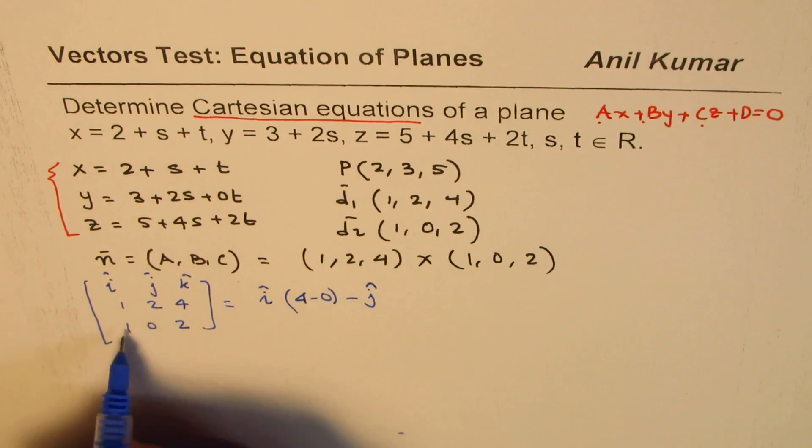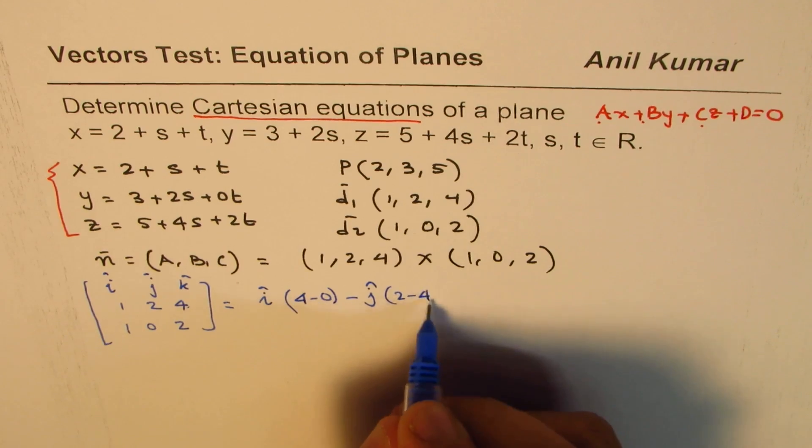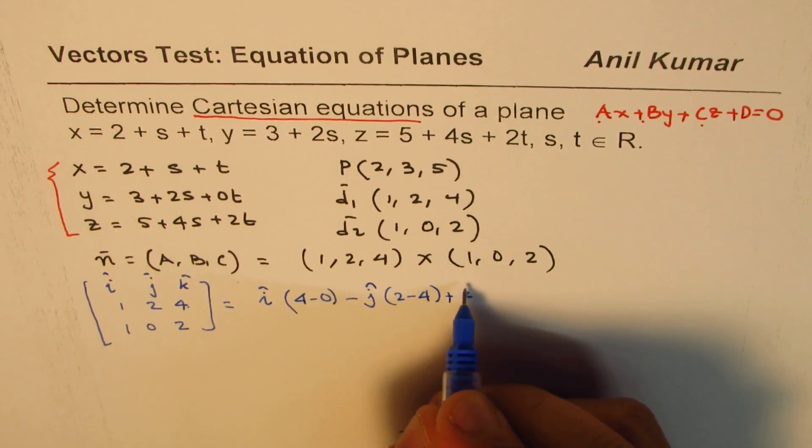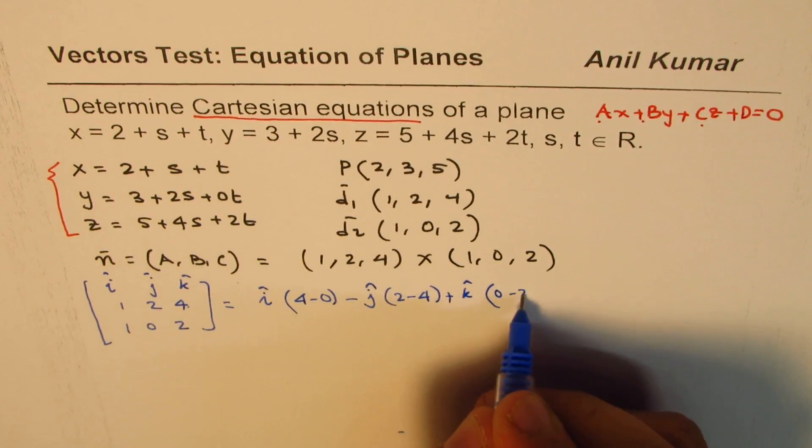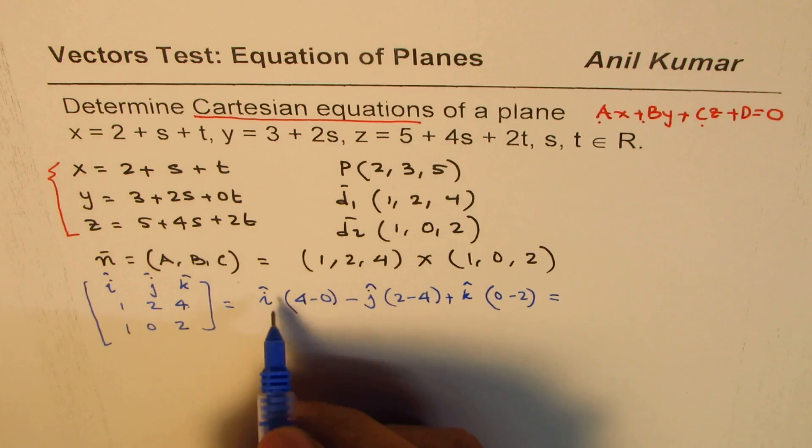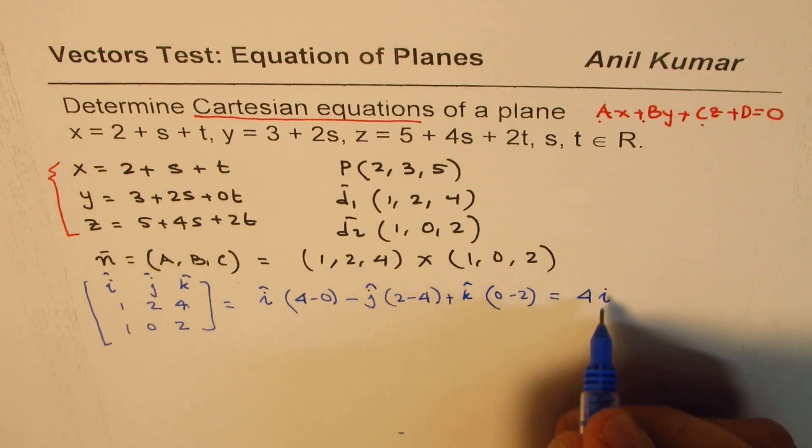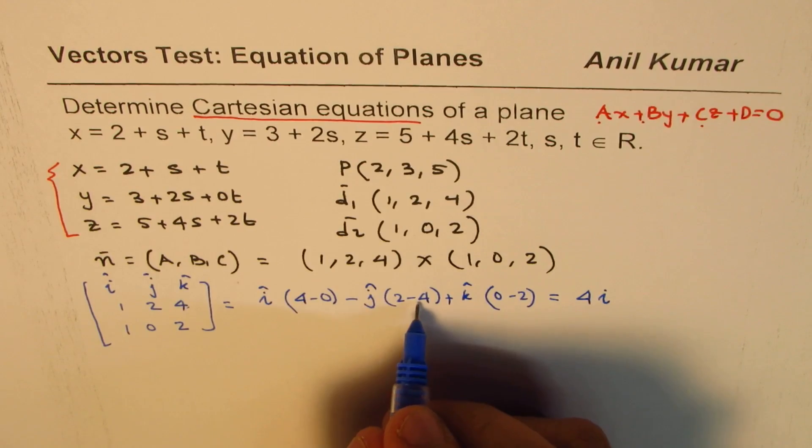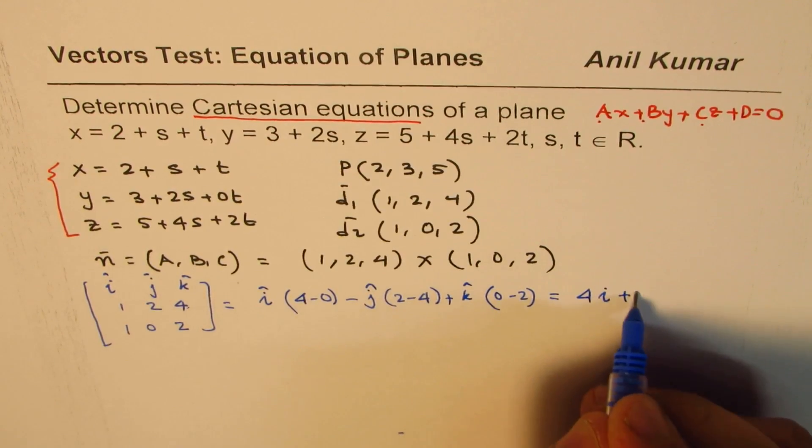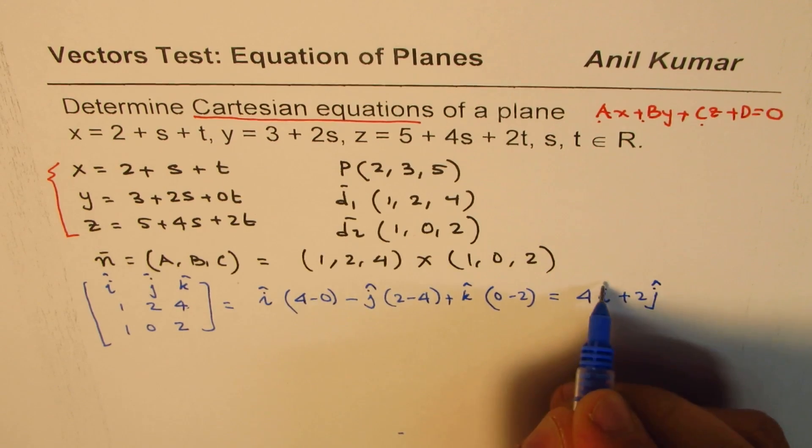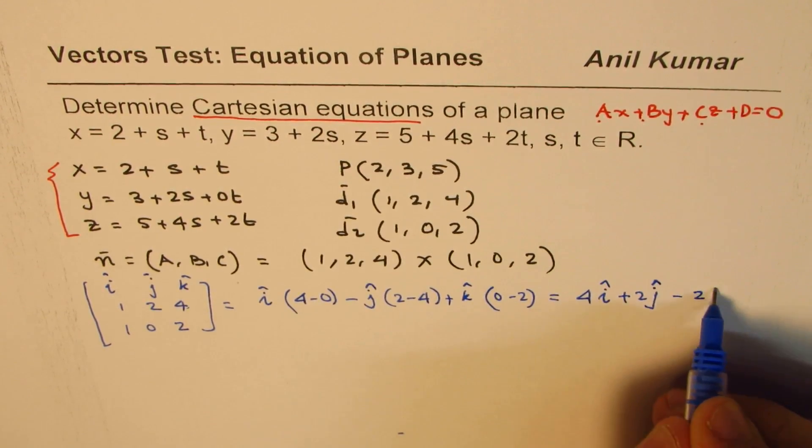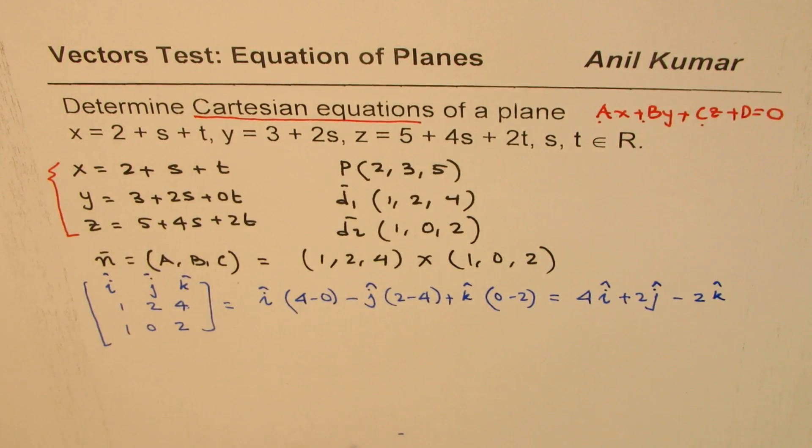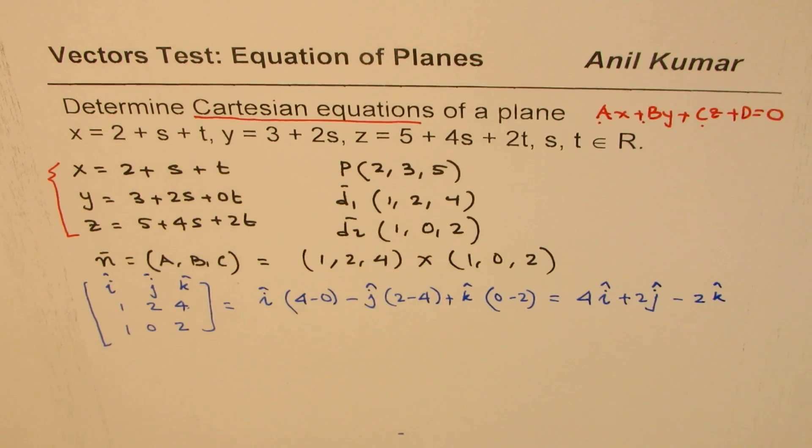That gives you 4i - (-2)j - 2k, which is 4i + 2j - 2k. So the normal vector is (4, 2, -2).